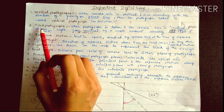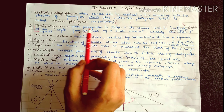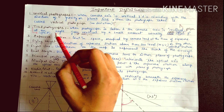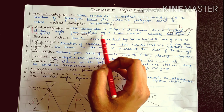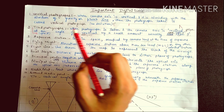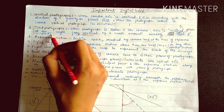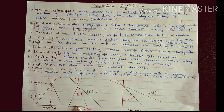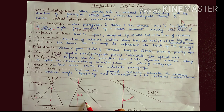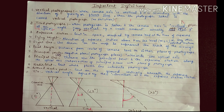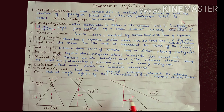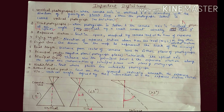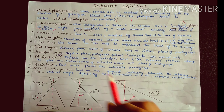The second definition is tilted photograph. When a photograph is taken and the camera axis is inclined from vertical by a small amount — usually less than or up to 3 degrees — it is called a tilted photograph. If the angle between the camera axis and the plumb line is more than 3 degrees, then it is called an oblique photograph.